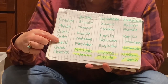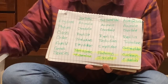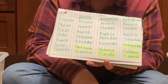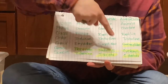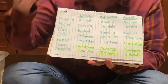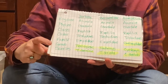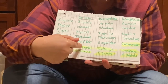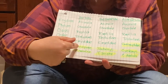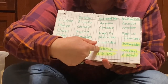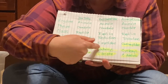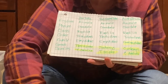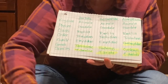When you get down to family, the box turtle and the red-eared slider are in the same family, but the one from Asia is in a different family. When you get down to genus, the box turtle and the red-eared slider are in the same genus, but the one from Asia is in a different genus.